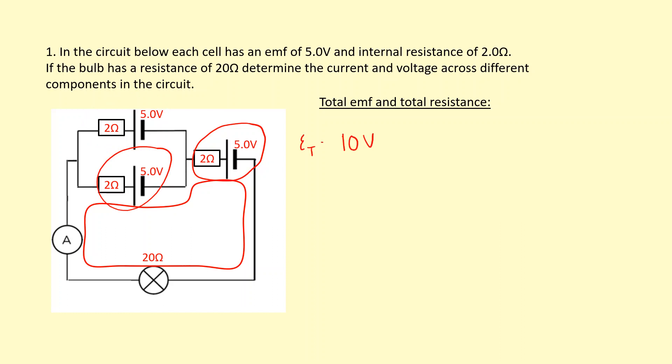For total resistance, think about how the current flows. All current has to go through this and this, so we do 20 plus 2. When it comes to this point, the current can go down either this or this route, so they're in parallel. To add in parallel, you do 1 over (1 over 2 plus 1 over 2), which equals 1. So the total is 23 ohms. 10 volts divided by 23 ohms gives 0.435 amps, and I can use that to figure out the potential difference across the different components.